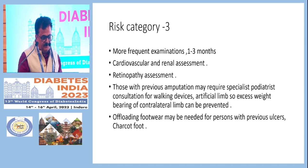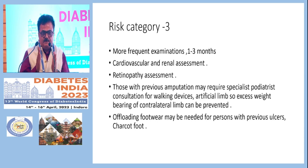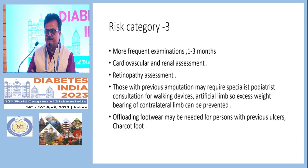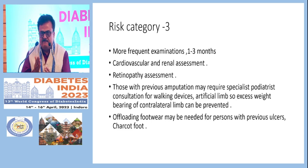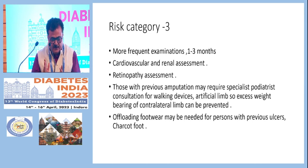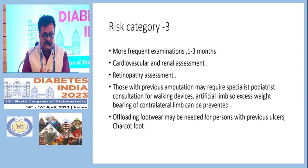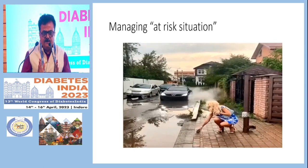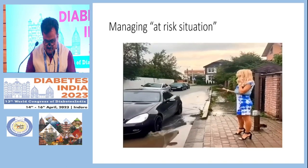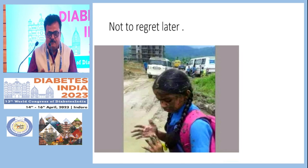Risk category 3 is the highest-risk group. Assess cardiovascular and renal status and screen for retinopathy. Patients with previous amputation may require referral for an artificial limb to avoid abnormal weight-bearing on the surviving limb, preventing further ulcers and amputations. Offloading footwear may be needed for persons with previous foot ulcers, as healed ulcers are also high-pressure areas that get easily cracked with minimal trauma. Manage your risk very carefully, because risk management is more important than making regrets later.